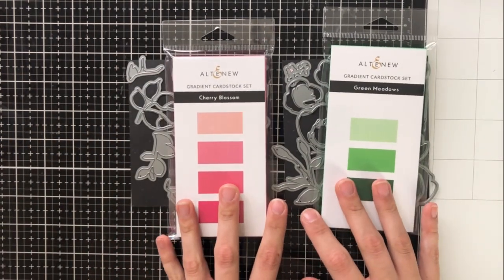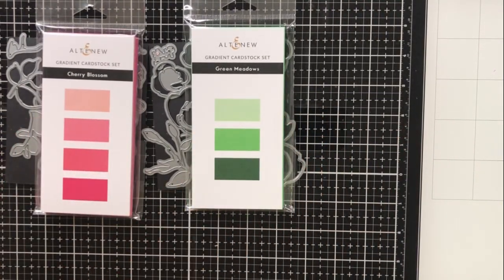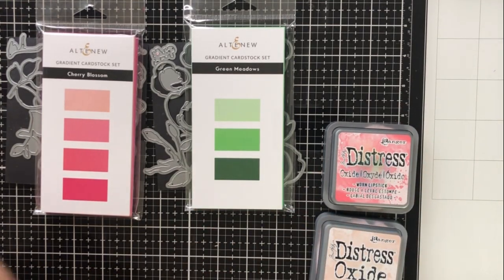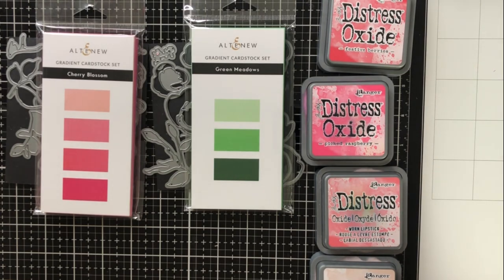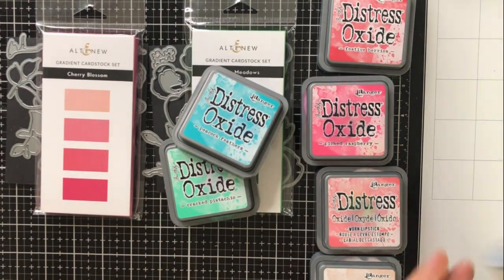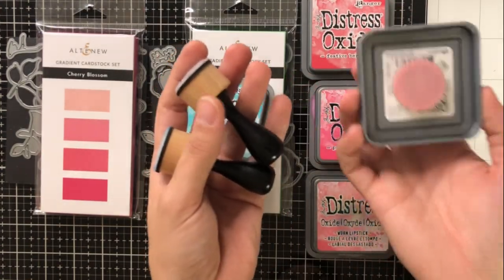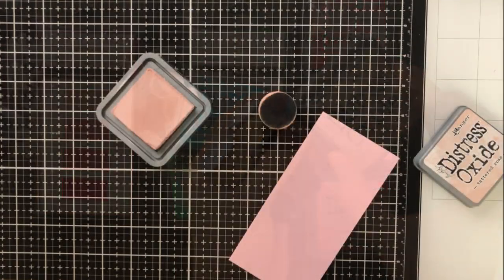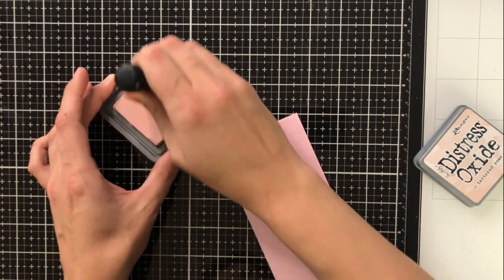So we're going to be using the Rose Flurries 3D dies today and these are layering dies. I'm also going to be using the gradient cardstock packs and some distress oxides to give that watercolor look. I'm going to be using lots of different colors that coordinate with the cardstocks that I'll be using, and to blend them on I'm going to be using the Ranger Foam blenders because I feel that these work best with distress oxides.